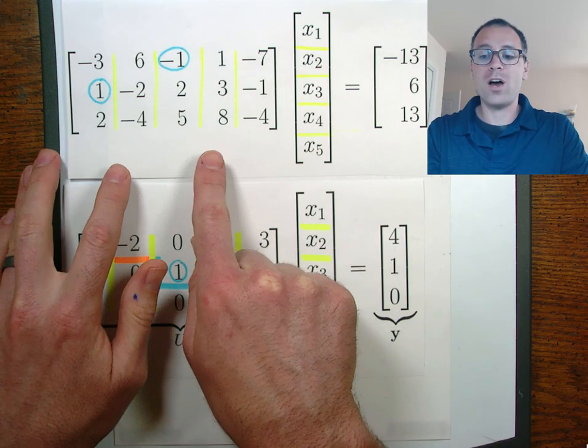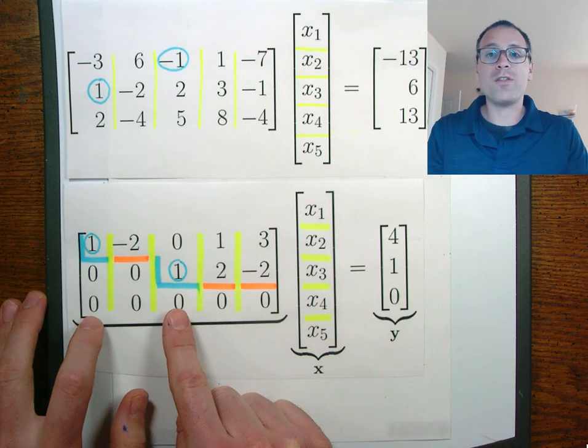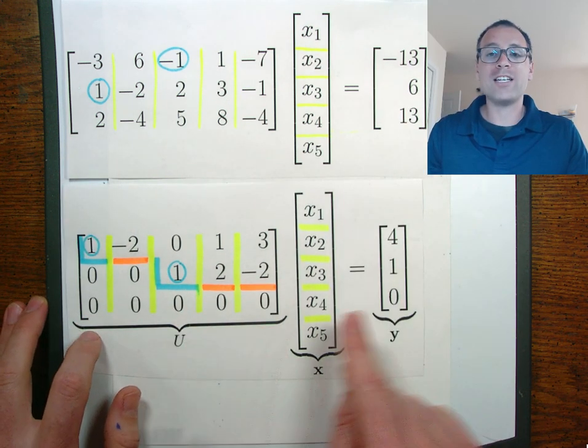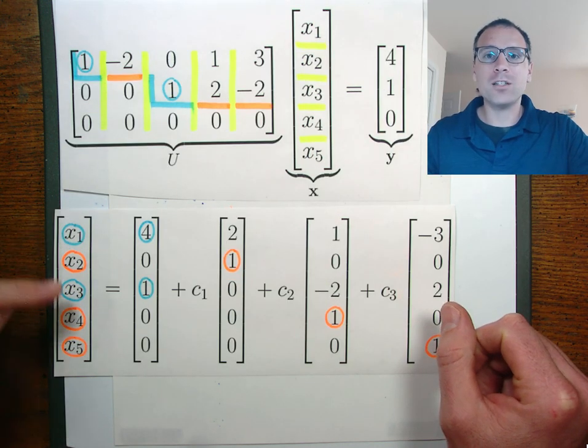Recall also that working with linear systems problem ax equal b is equivalent to working with the linear systems problem ux equal y from the standpoint of our solutions.